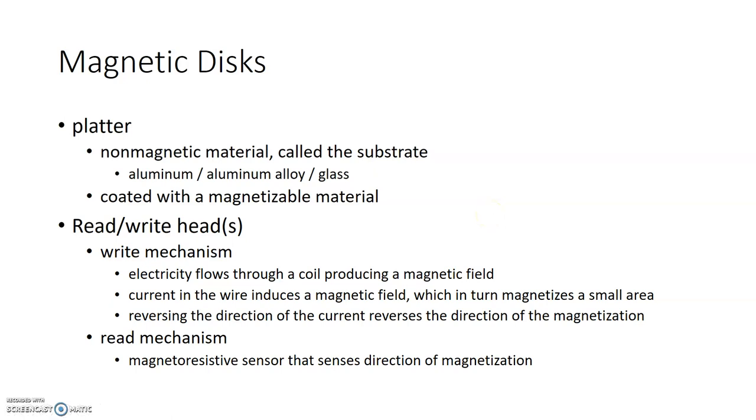So the magnetic disks, what we have in terms of the disks is there's a platter and the underlying material of the platter is non-magnetic. It's also known as the substrate and it varies depending on the drive. It could be made of aluminum or aluminum alloy, or it could be made of glass.